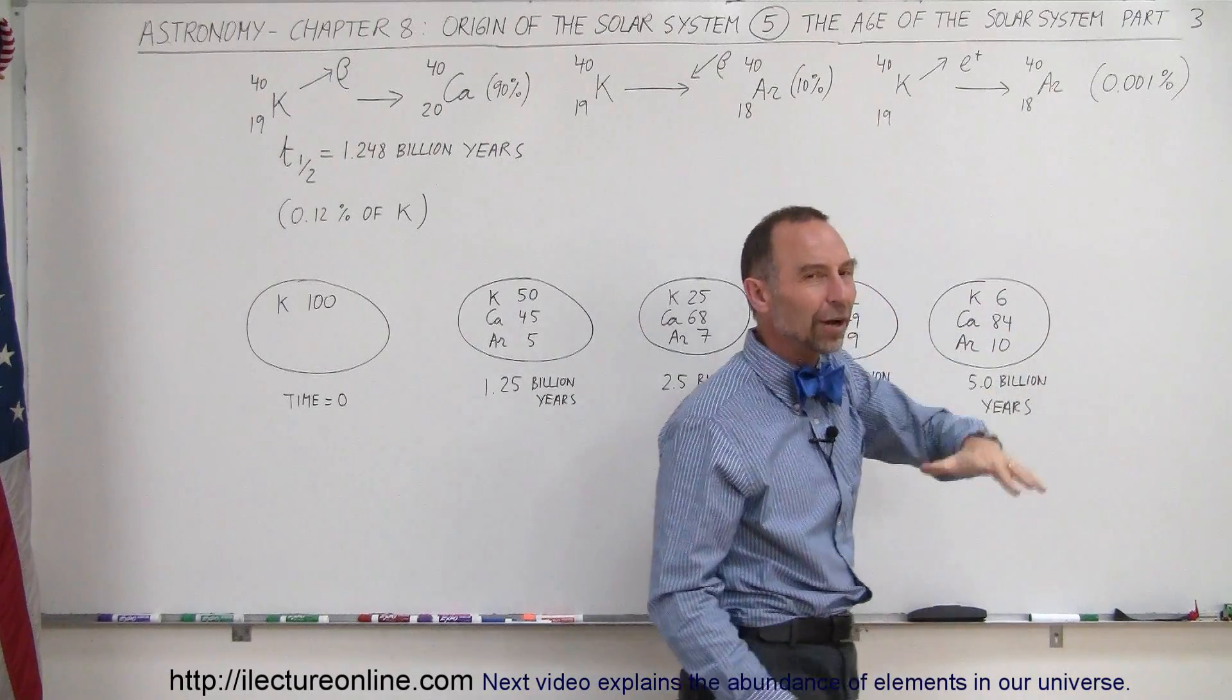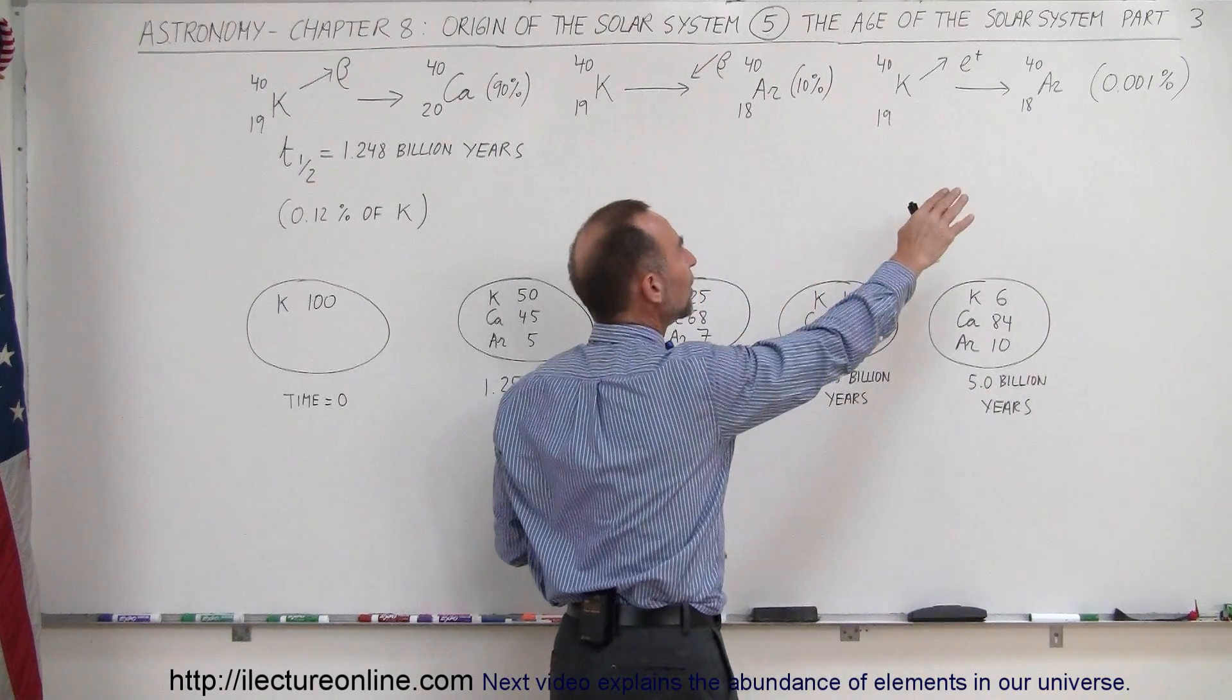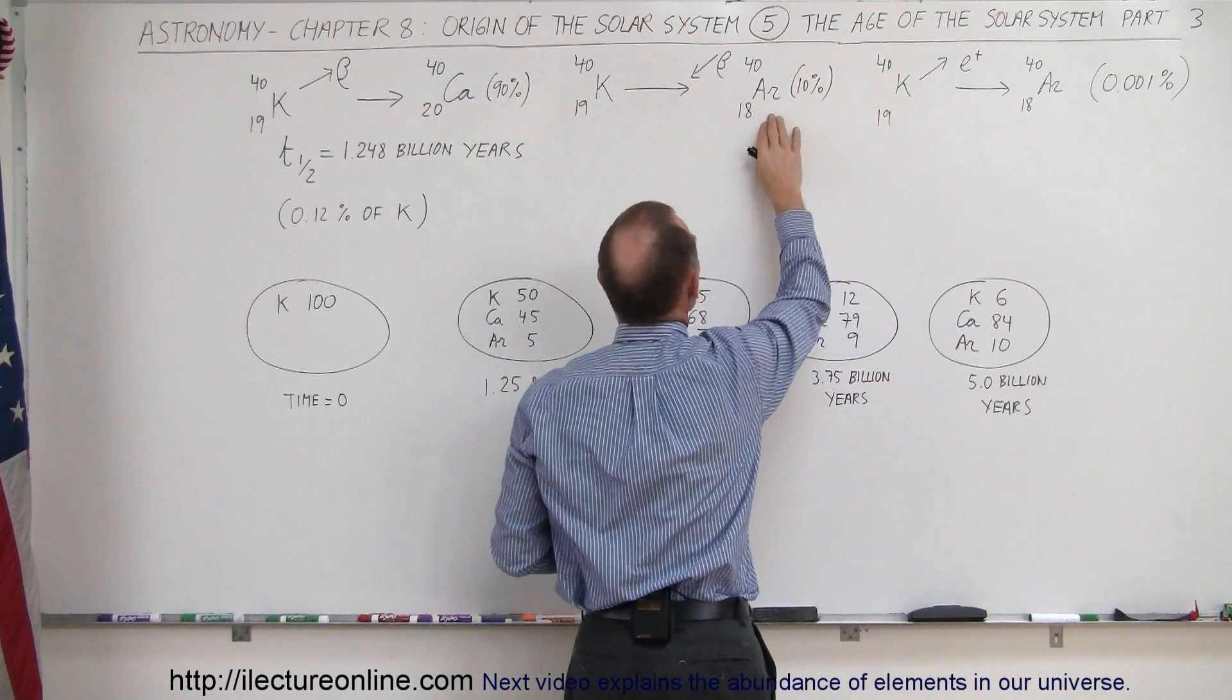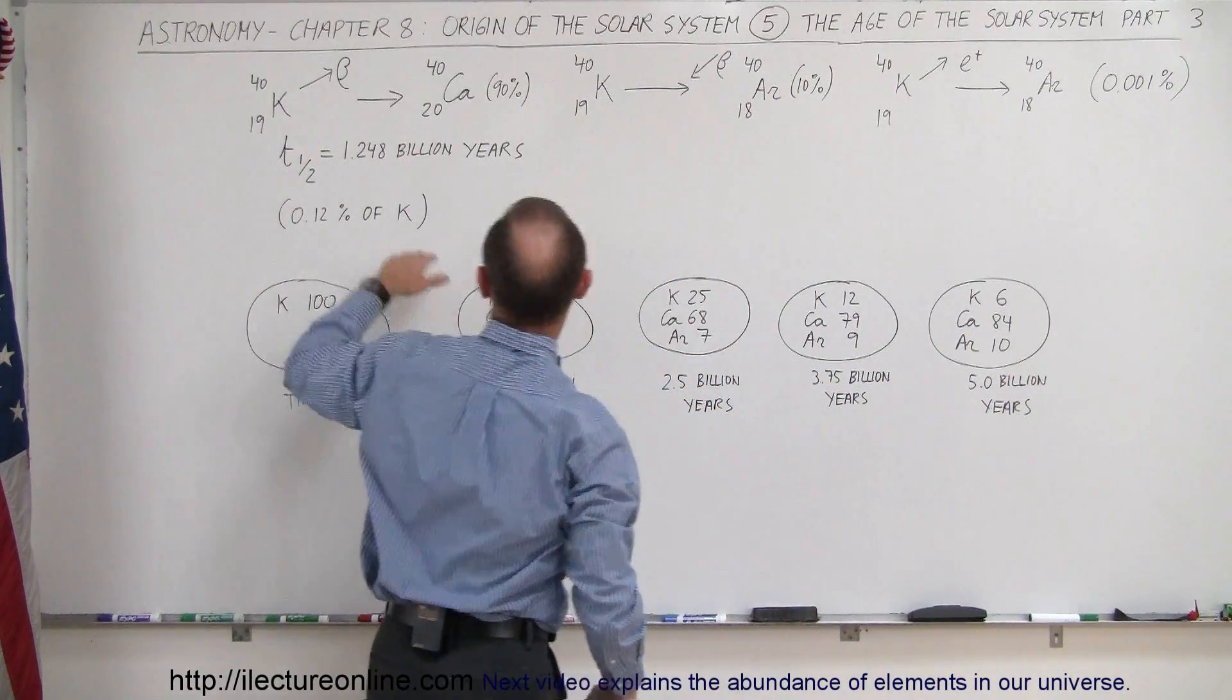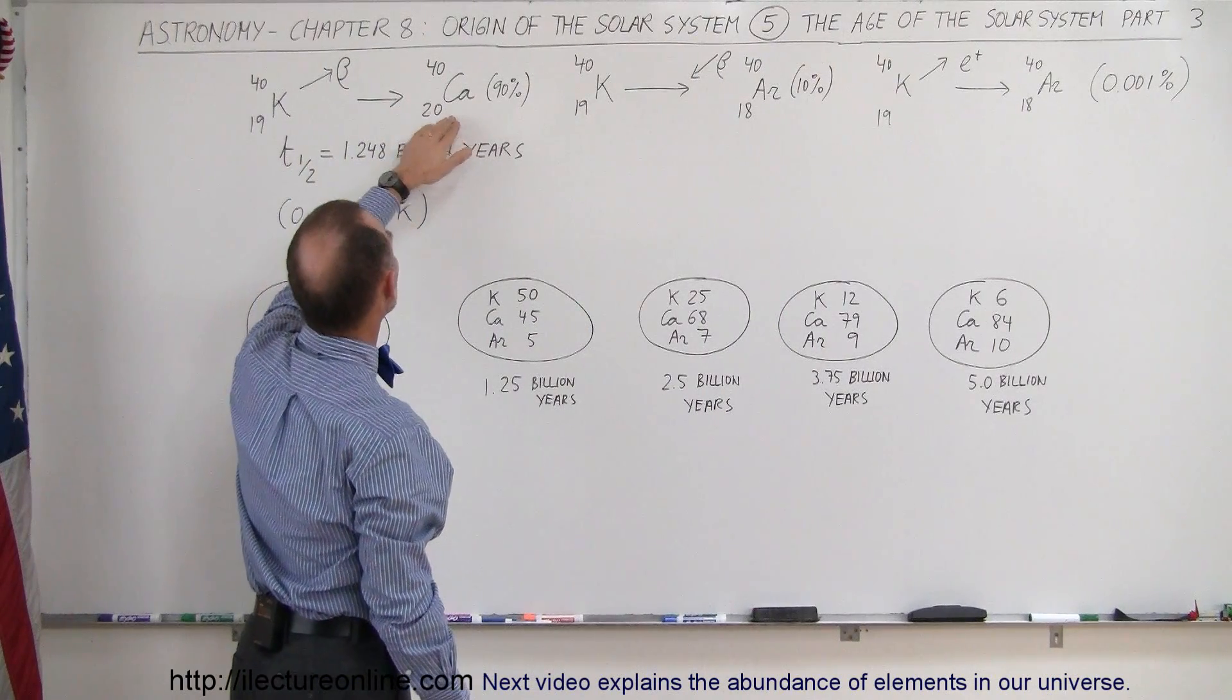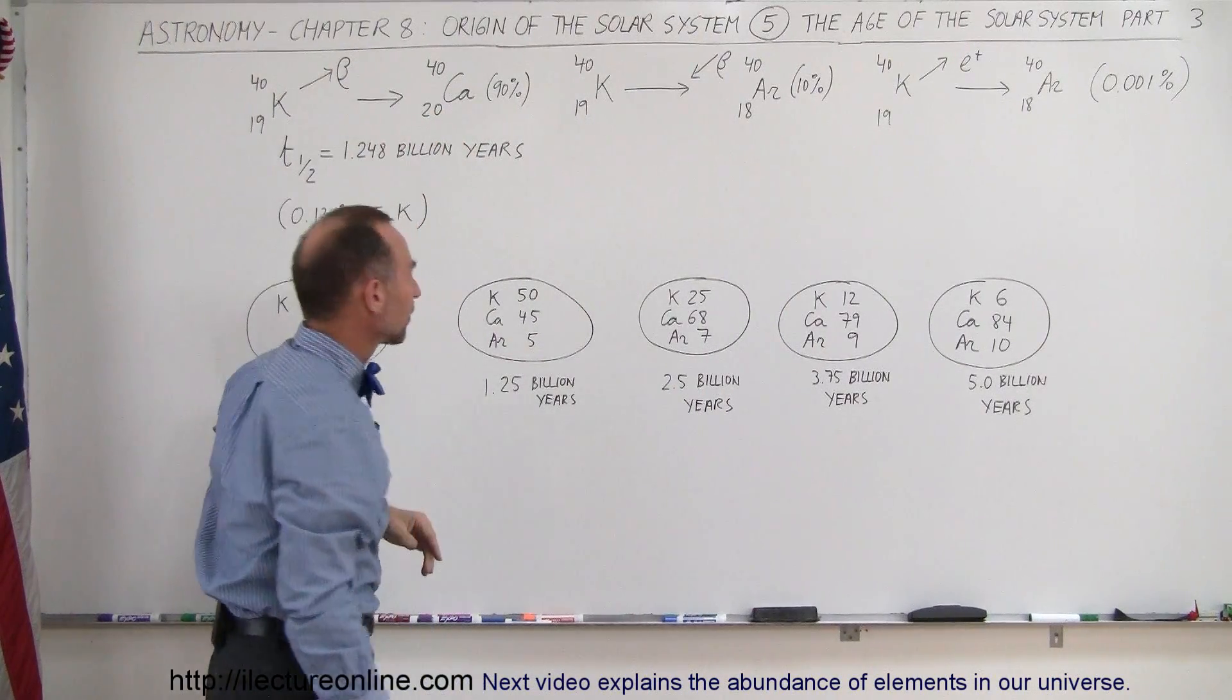So we do know it happens, it's a very rare thing, and we could kind of ignore it because it really doesn't contribute a lot of argon. The vast majority of argon is contributed by beta capture, and the vast majority of the calcium production comes from beta ejection.